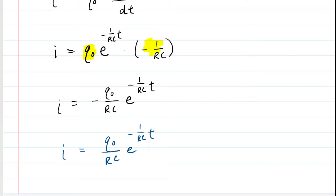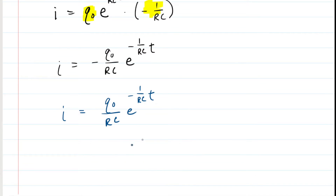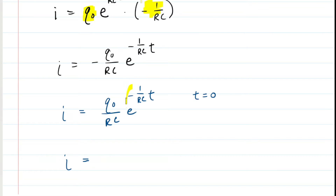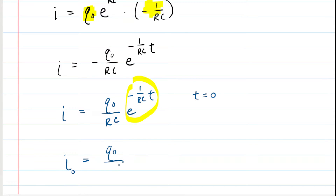We want to calculate the current when discharging starts, so time equals 0. Substituting t = 0, the power in the exponent becomes 0, and e to the 0 is just 1. So the initial current equals the initial charge divided by RC.